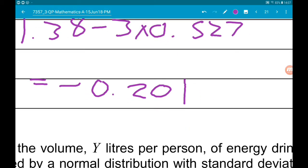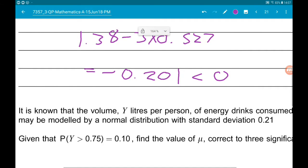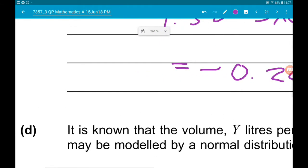That is less than zero, which doesn't make sense in context of the question because we're talking about the amount of carbonated drinks that people consume. A negative amount is ridiculous, so this makes a normal distribution unsuitable.